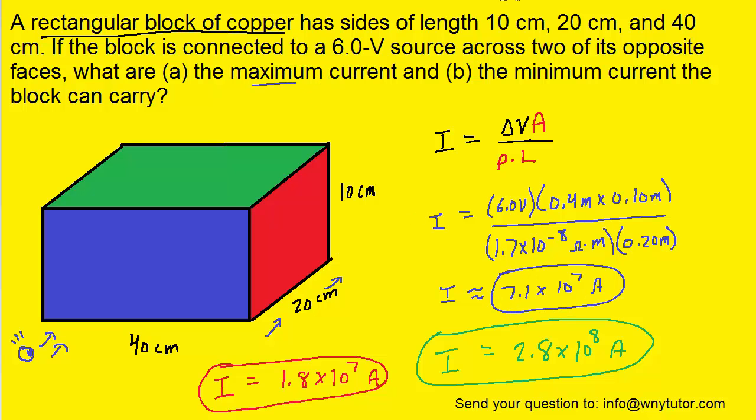So now we just have to pick for part A the maximum current, which hopefully we could see is the green one. So this would be the correct answer to part A, because that is the largest value of the current that we obtain. For part B the minimum current, we see that 1.8 times 10 to the seventh is the minimum current.